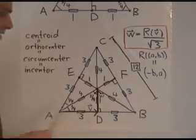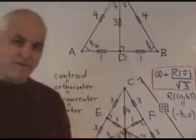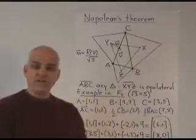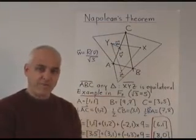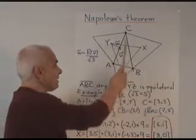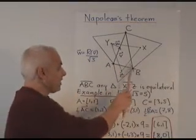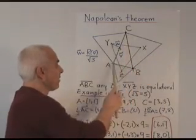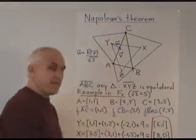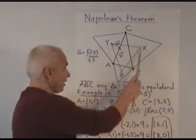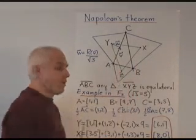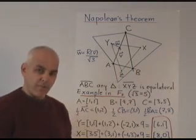We're going to have a look at how that applies to Napoleon's theorem. Napoleon's theorem is attributed to the French emperor. It says that if you have a triangle ABC and you construct equilateral triangles on each of the three sides, then the three centers of those equilateral triangles, x, y, and z, always form an equilateral triangle themselves.